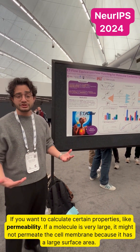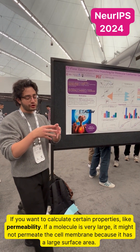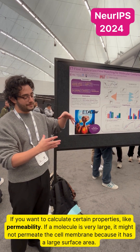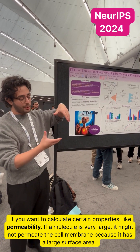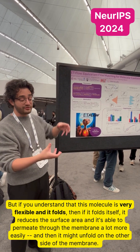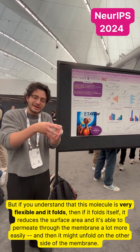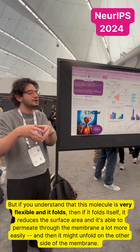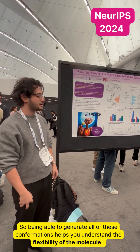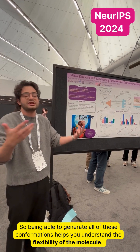If you want to calculate certain properties like permeability — if a molecule is very large and you have a cell membrane, it might not permeate through the cell membrane because it has a large surface area. But if you understand that this molecule is maybe very flexible and it folds, then folding reduces the surface area and it's able to permeate through the membrane more easily, and then it might unfold on the other side. Being able to generate all these conformations helps you understand the flexibility of the molecule.